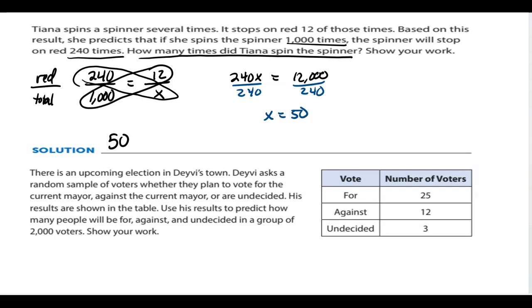She used the information she had for 1,000 spins and was able to solve how many times she spun it if she landed on red 12 times. Writing these ratios helps.